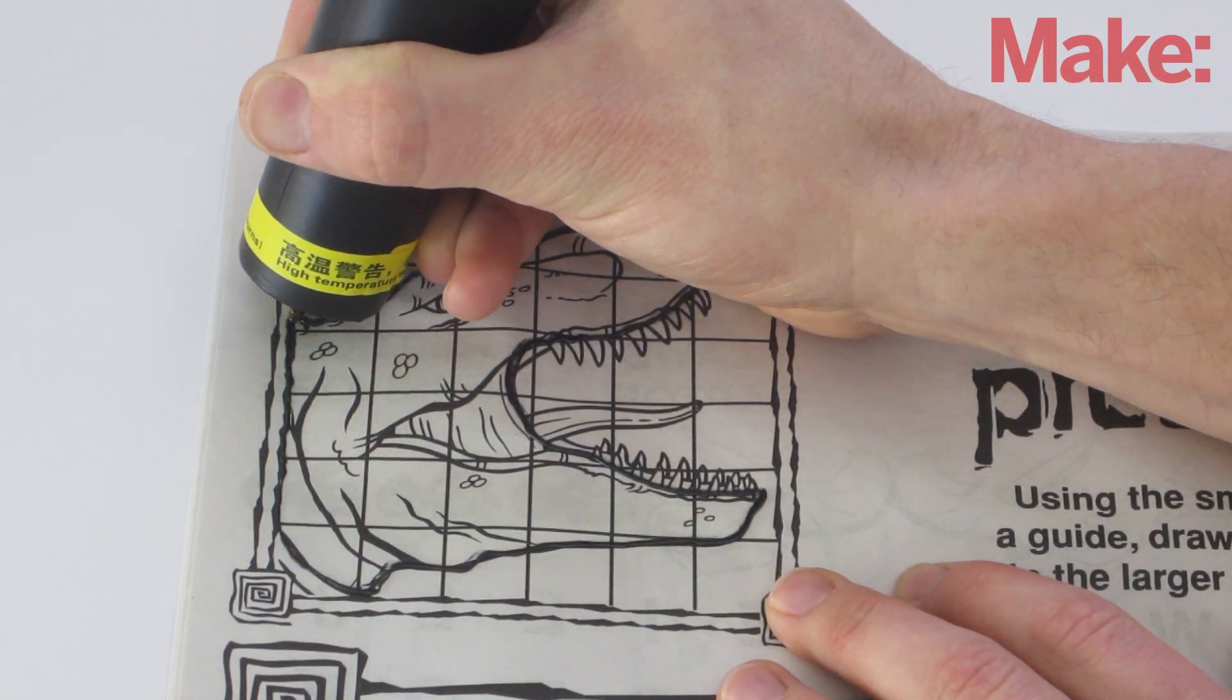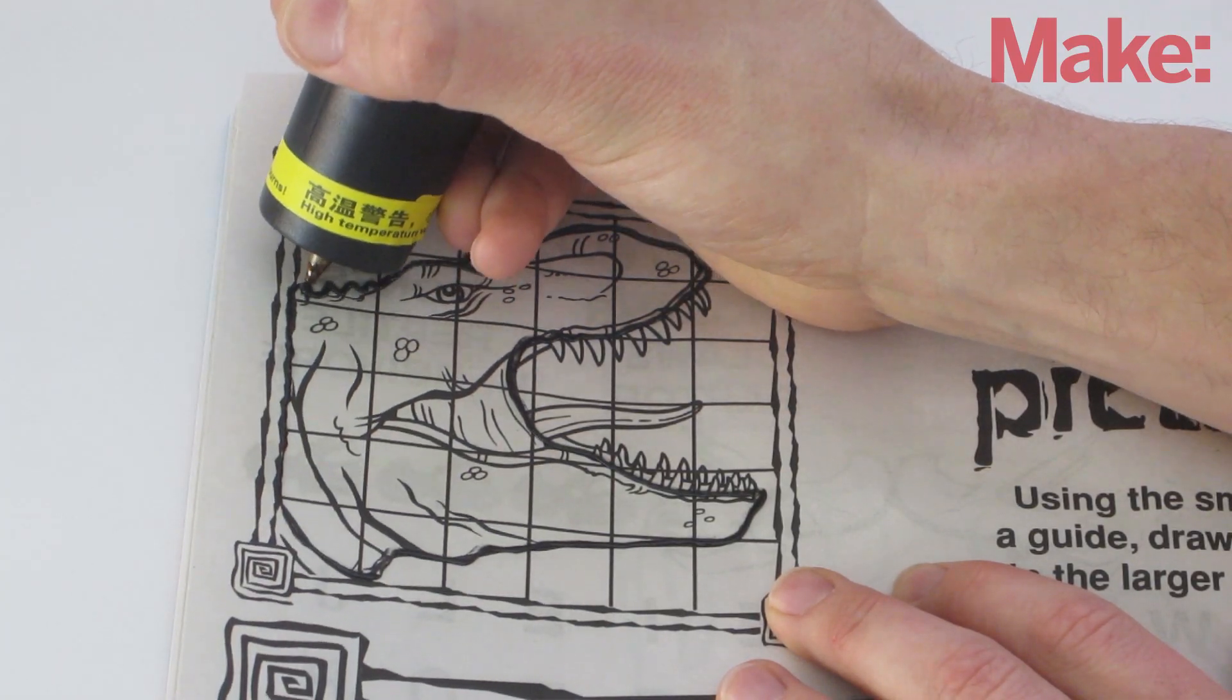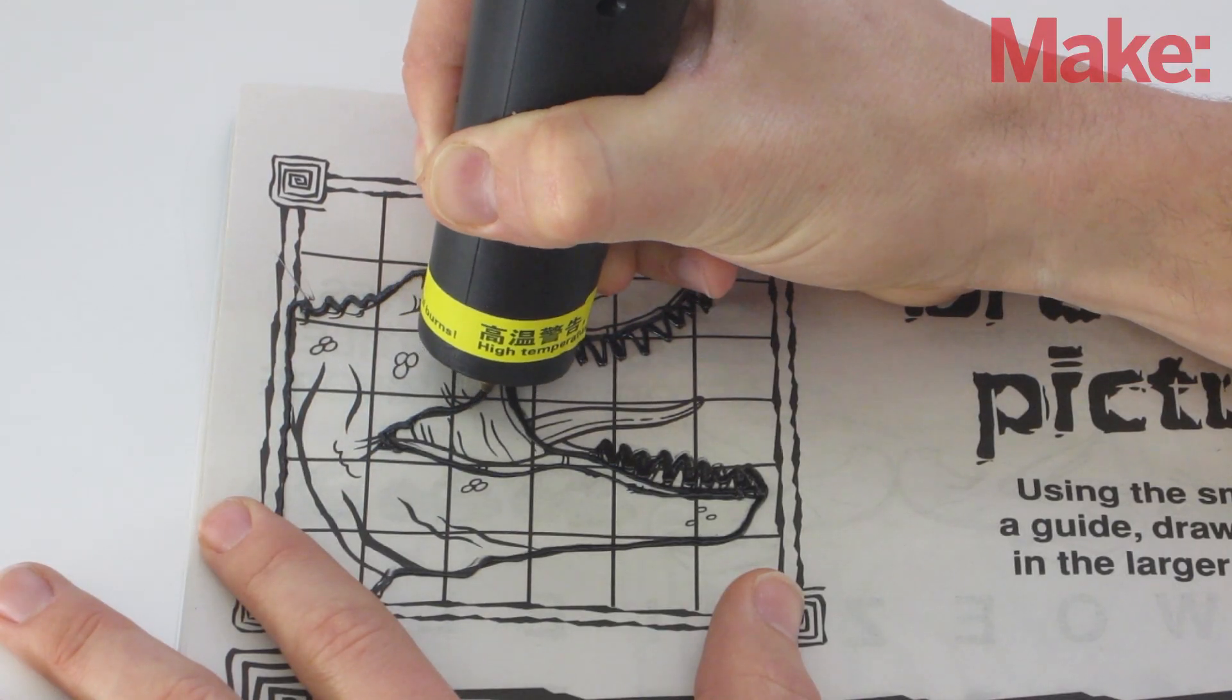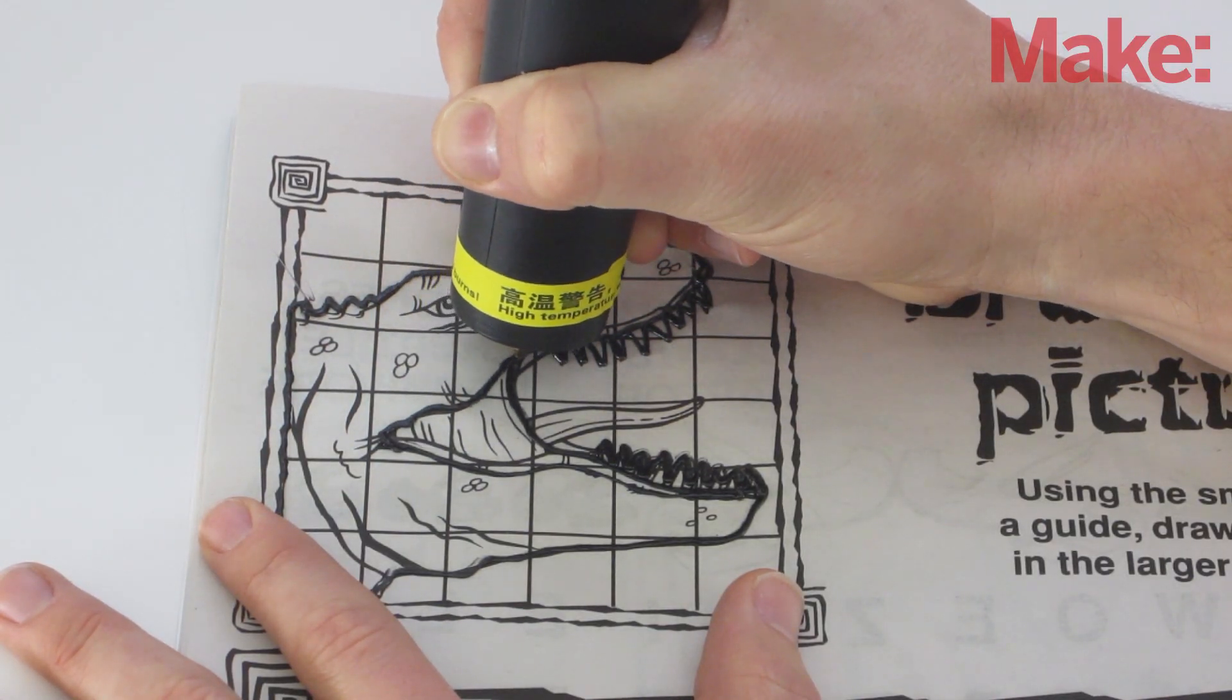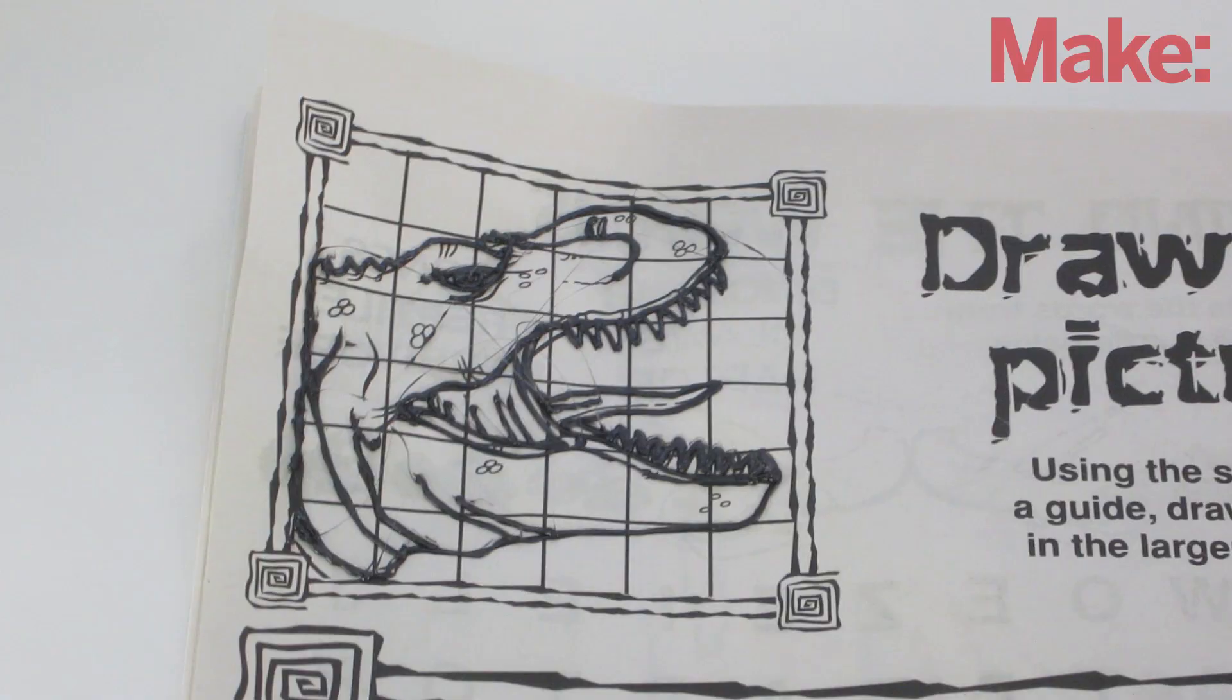At the end of each line, pause for a few seconds to let the last bit of plastic solidify before moving the pen away. To connect two lines, hold the tip of the pen over the junction long enough for the heat to fuse the two lines together. Continue adding lines until your sketch is complete.